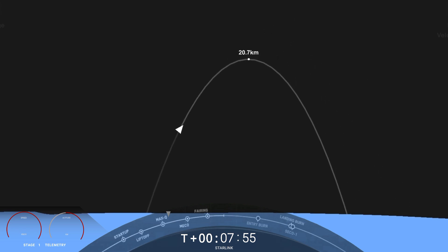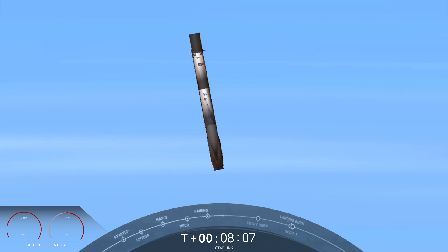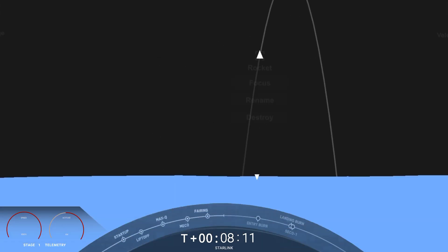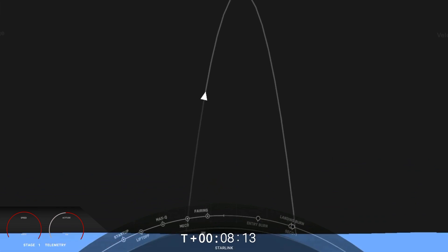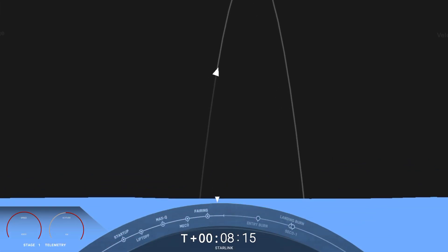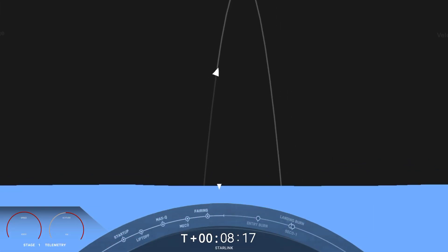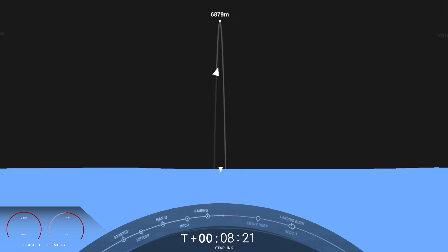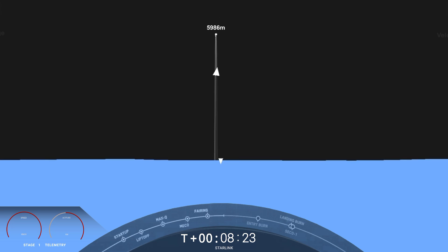Stage one transonic. We did lose video footage of the first stage. This can sometimes happen as the stage is traveling pretty quickly, but we do hear callouts that it is continuing to make its way to our drone ship. Stage two FTS is safe. Stage one landing burn.